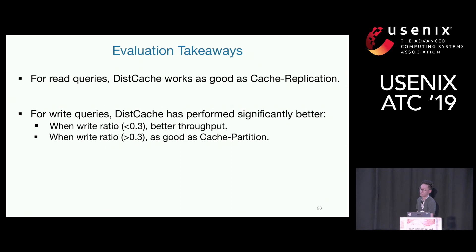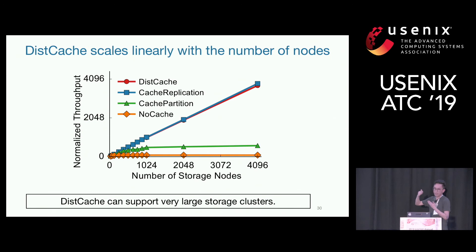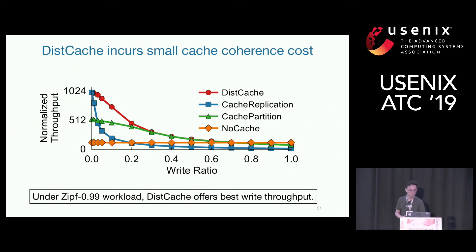Looking at the figures, the x-axis shows different distributions and the y-axis is normalized throughput. DistCache achieves near-perfect throughput for skewed workloads — uniform is naturally balanced, but more skewed distributions still show excellent results. Increasing the number of storage clusters up to 4,000 nodes, DistCache scales linearly with the number of nodes and works exactly the same as replication. For write queries with a Zipfian 0.99 workload and different write ratios, DistCache always offers the best throughput, especially when the write ratio is less than 30%.